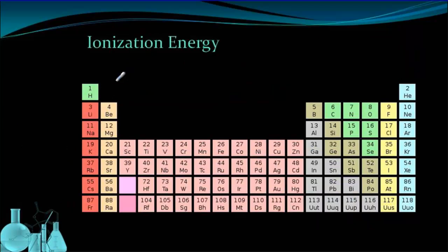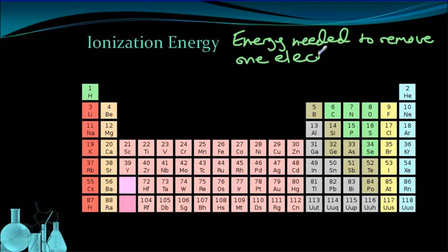The next property we're going to look at is ionization energy. Ionization energy is the energy needed to remove one electron from an atom. Basically, it's the amount of energy needed to make a cation, which is our positive ion.